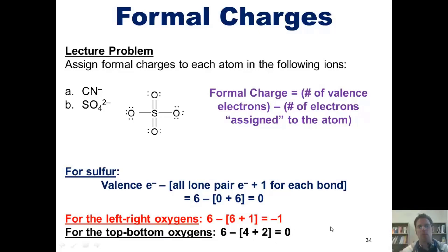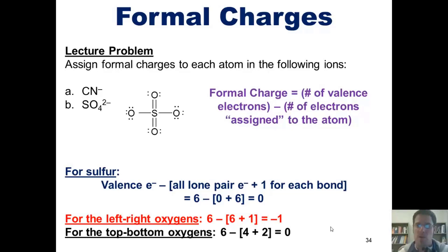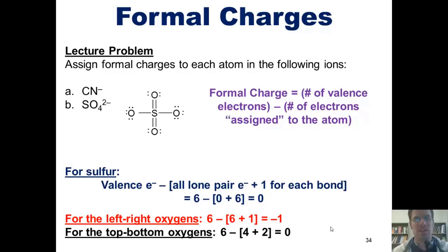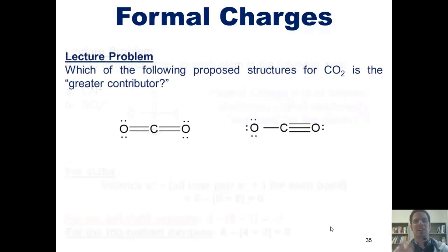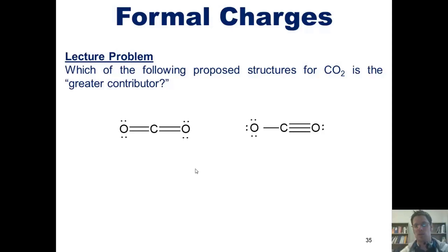Comparing the formal charges for this Lewis structure versus the Lewis structure shown on the previous slide, this one gives us more numbers that are closer to zero. Thus, this is actually the greater contributor between the two and is the more stable Lewis structure. Now, which of the following proposed structures for carbon dioxide is the greatest contributor? I'm not going to do this one for you — we'll let you do it on your own following the steps I delineated in the previous examples.